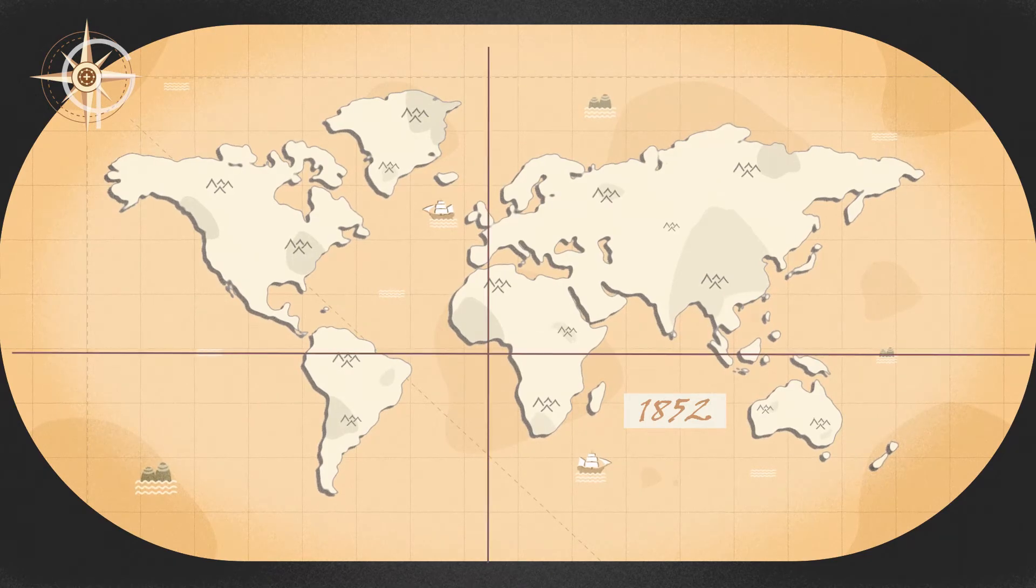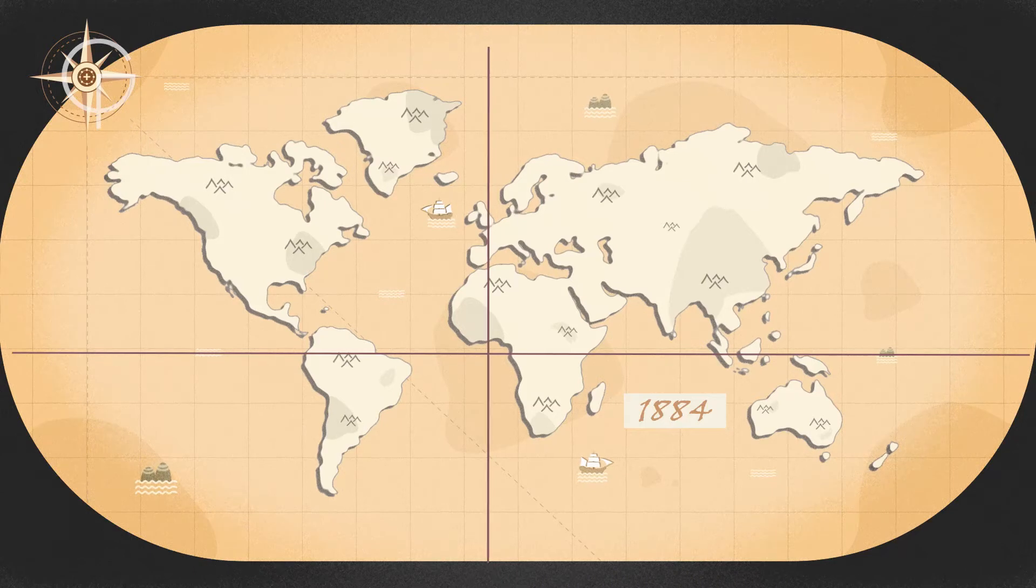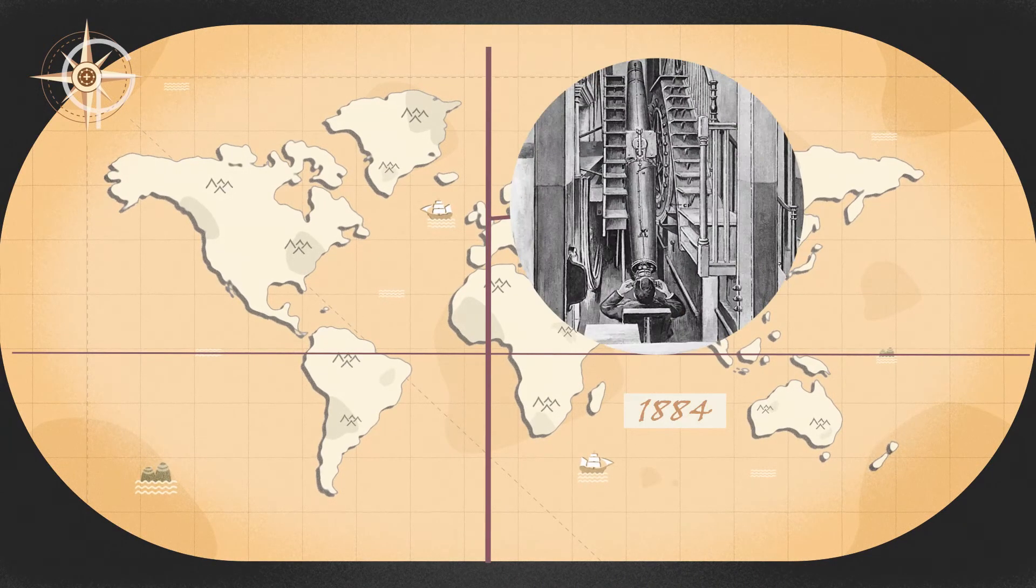Greenwich became an important place for time and longitude, both in the UK and abroad. In 1884, a group of specialists decided that the meridian line defined by the main telescope at Greenwich should be the prime meridian of the world.